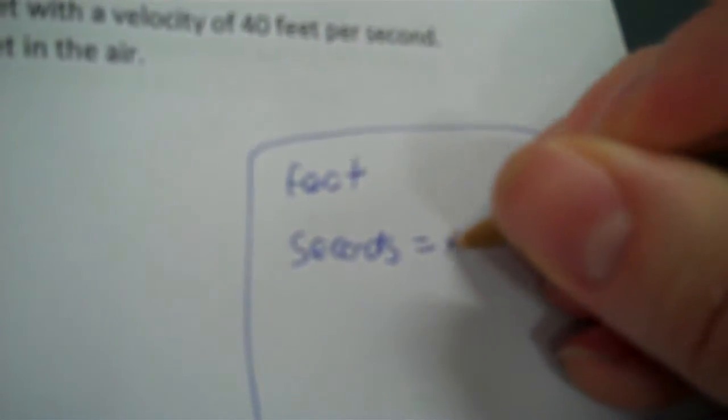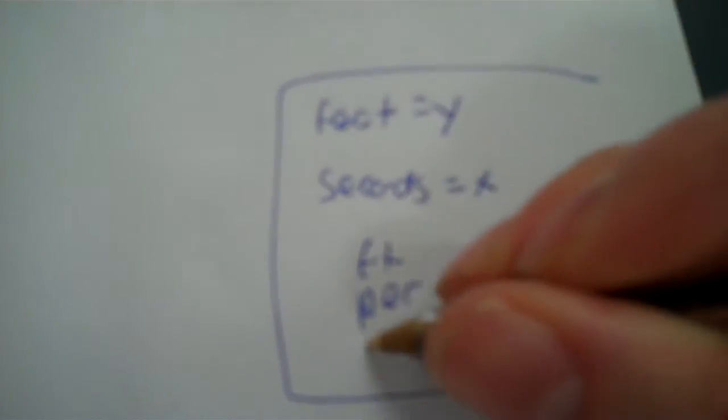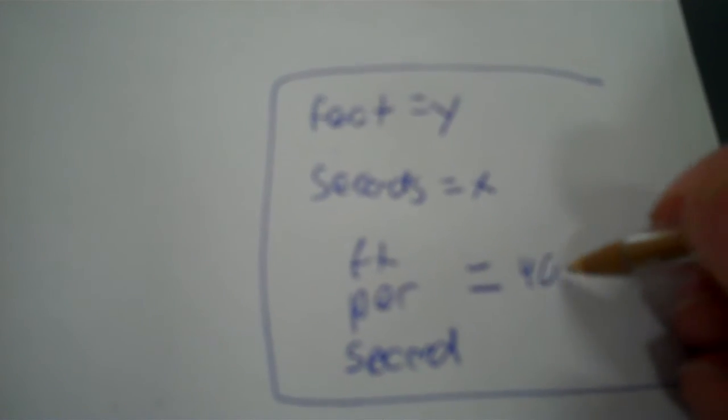Next problem. As you can see, it keeps repeating the same information, but you're just finding different things. A basketball is thrown into the air from a height of six feet with a velocity of 40 feet per second. Find how many seconds it takes the ball to get to 20 feet in the air. So you have feet and seconds — you're not finding the maximum. Feet per second is 40 times X.